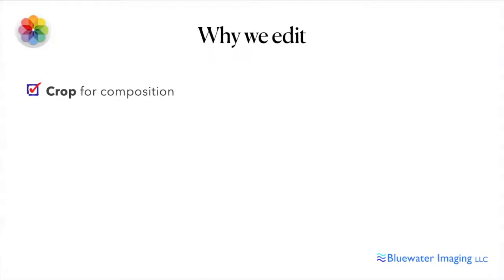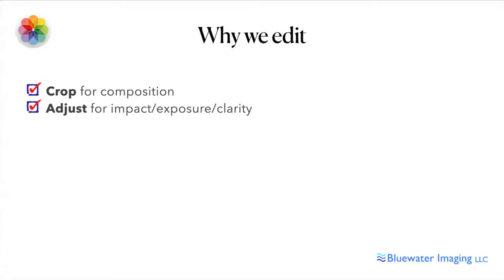So let's talk about why we edit. What is this whole editing thing about? The first part we're going to talk about is cropping. Cropping is primarily for composition — it's how we show what we're doing and frame our little view onto whatever we've chosen to photograph. Then we have adjustments, which are primarily what we do for impact. We may need to adjust exposure, add detail in various ways. We have multiple adjustments, and this is really the look and feel of what we create in our photos.